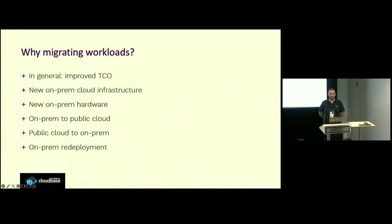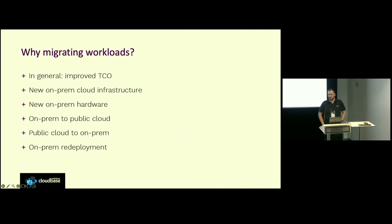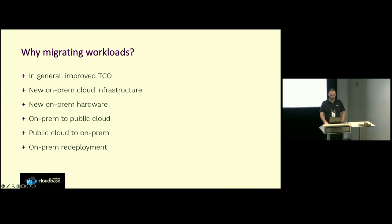There are also other potential answers: new cloud infrastructure, new on-prem hardware, moving from public cloud to on-prem cloud. A previous presentation from Canonical showcased user stories with running a lot of infrastructure in public clouds that inflated the bill, so you'd have to move to on-prem. And there are isolated cases with customers running very old OpenStack versions who find it easier to get a new deployment and migrate workloads to it.